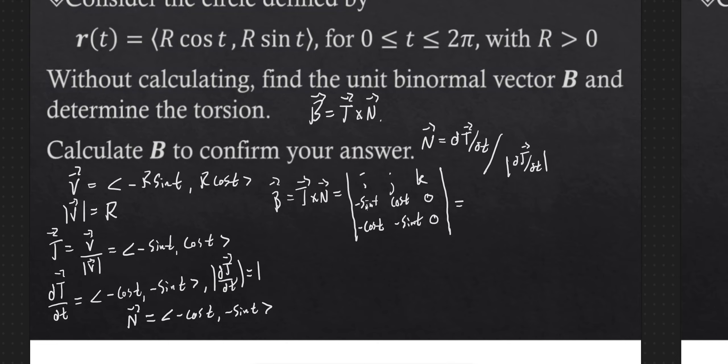So k, I do minus sin t times minus sin t. That's sin squared t. Minus cos t times negative cos t. So that's going to be plus cos squared t. And that's in the k direction. And that's, right, sin squared plus cos squared is just one. And so we just get out the unit coordinate vector k.